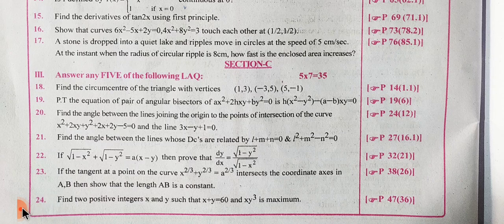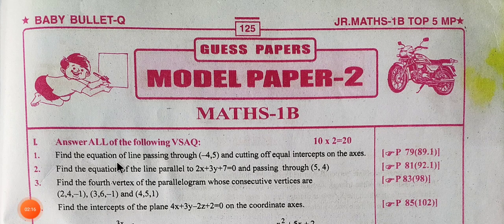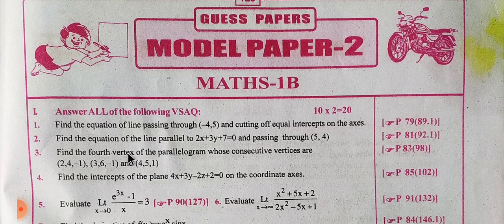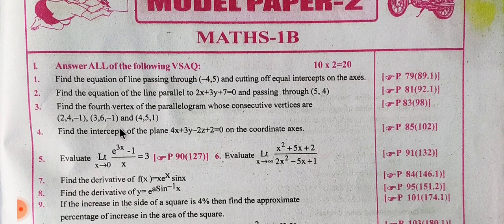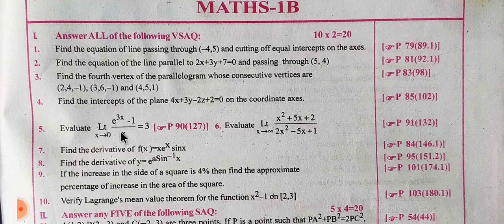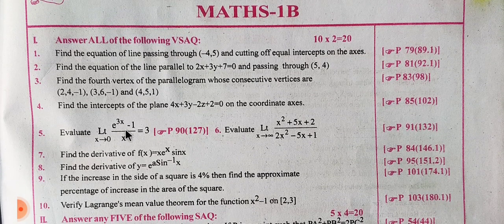Let's start the next paper. Let's take a look at model paper 2. In Section A, you get clarity on screen for questions 1 to 10. You can click clear and choose what you want to choose.